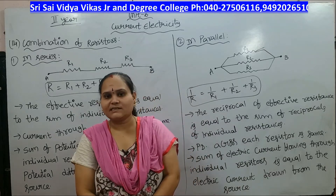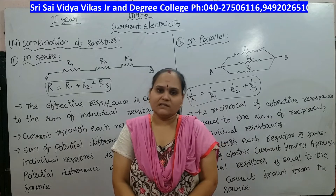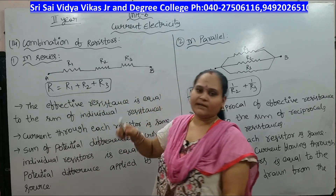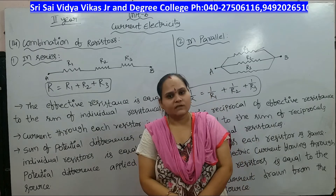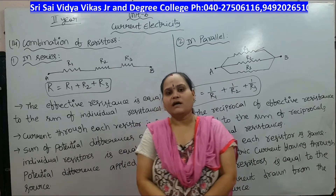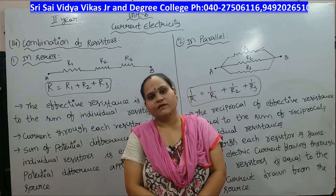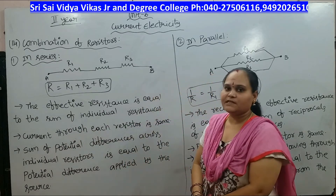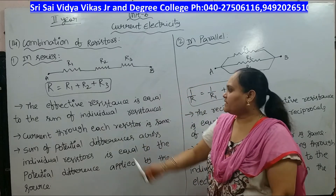In series combination, the resultant resistance R is equal to the sum of individual resistances: R = R1 + R2 + R3. For example, if R1 = 2 ohms, R2 = 3 ohms, R3 = 4 ohms, then the total resistance R = 2 + 3 + 4 = 9 ohms.